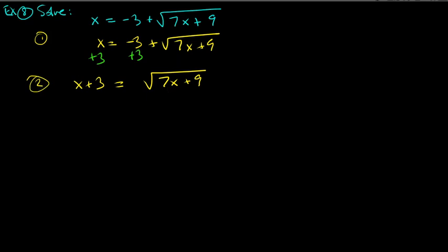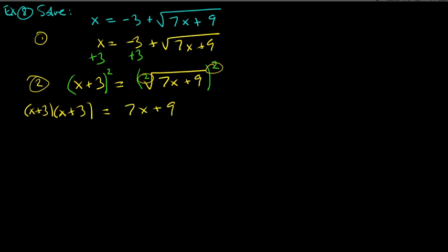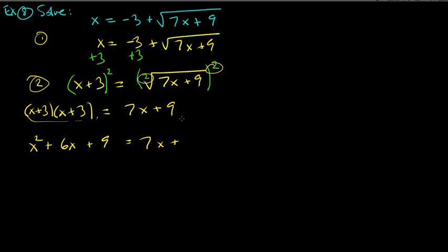Step two: square both sides. On the right, squaring the square root leaves 7x plus 9. On the left, (x plus 3) squared — please don't write x squared plus 9; you must FOIL. Foiling gives x squared plus 6x plus 9.